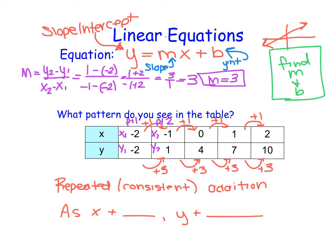This 3 over 1 actually comes from the fact that we're adding 3 every time — that's our change in y, our rise. We're going up 3 and then moving to the right 1. Those repeated additions show that y added 3 and x added 1, so slope is really how we change y over how we change x — our slope is 3.